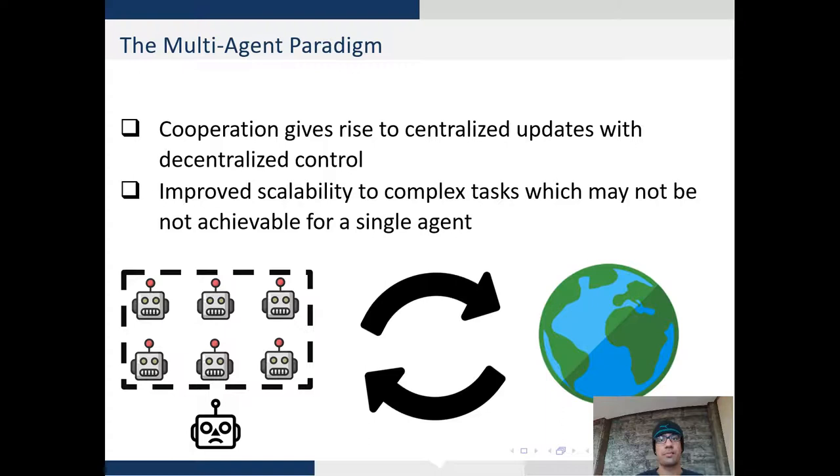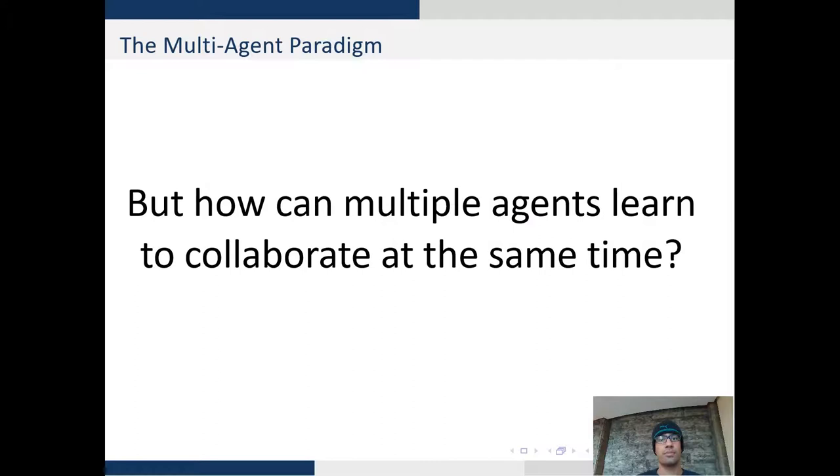We focus our attention to cooperation which is a hard problem in the case of centralized training and decentralized control. This is essential because a single agent may not be able to achieve all of the complex tasks thus we require multiple agents to act simultaneously.